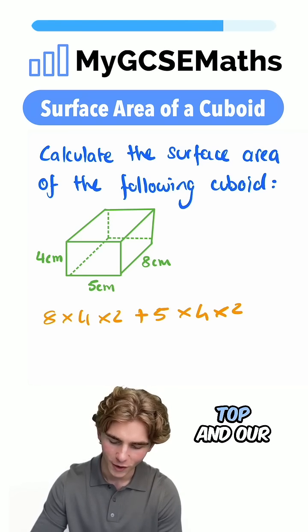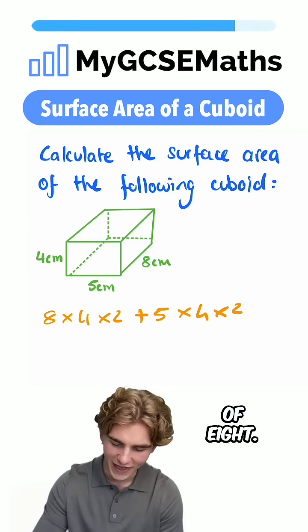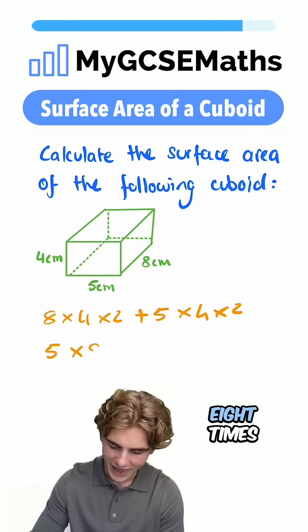And lastly, we have our top and our bottom, a width of five and a length of eight. So we have five times by eight times by two.